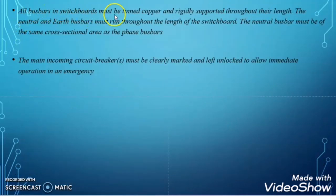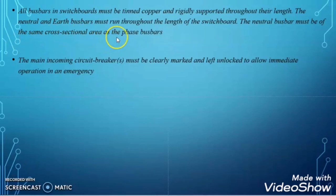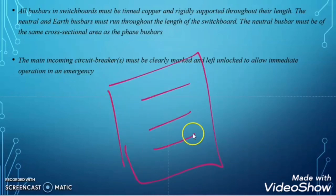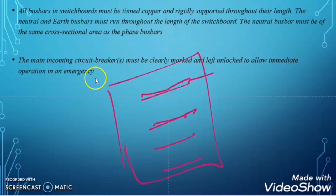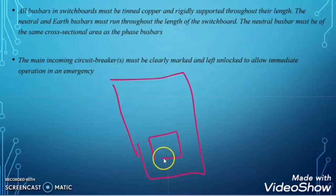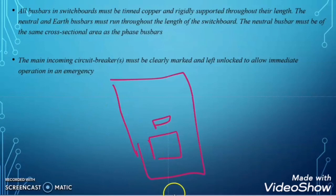The next clause states that all busbars in the switchboard must be tinned copper and rigidly supported throughout their length. The neutral and earth busbars must run throughout the length of the switchboard, and the neutral busbar must be of the same cross-section area as the phase busbars. Finally, the main incoming circuit breaker must be clearly marked and left unlocked to allow immediate operation in an emergency.